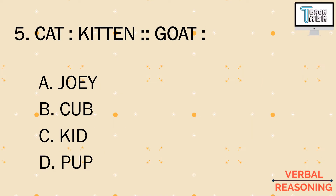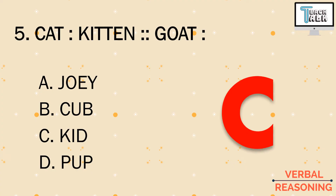Number five: cat is to kitten, goat is to blank. This question is easy — the baby form of a cat is called a kitten. Using that relationship, what is the baby form of a goat? Is it a) joey, b) cub, c) kid, or d) pup? Joey is the baby form for kangaroo, and pup is short for puppy — a dog's baby form. The answer is letter c) kid. Cub may refer to the young of a lion, but kid is the term for the baby goat.